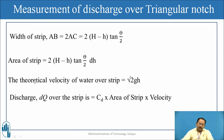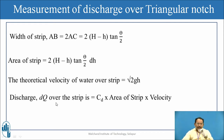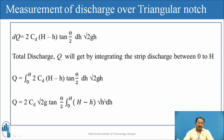The area of the elementary strip is width multiplied by depth dh, giving 2(H - h) tan(θ/2) · dh. The theoretical velocity is √(2gh). The elementary discharge dq = Cd × area × velocity = 2·Cd·(H - h)·tan(θ/2)·dh·√(2gh).